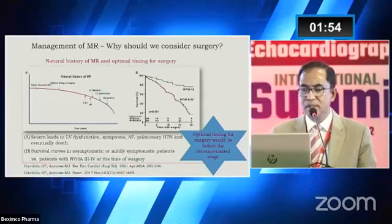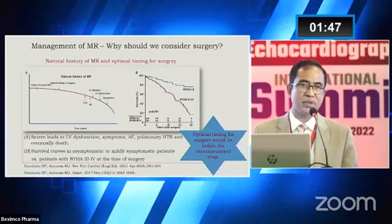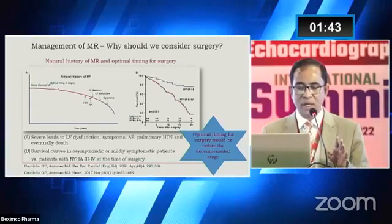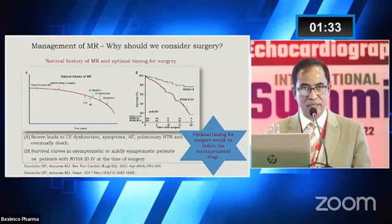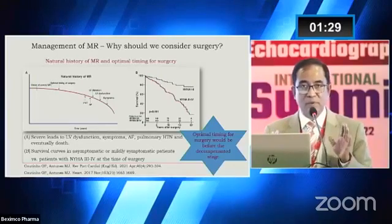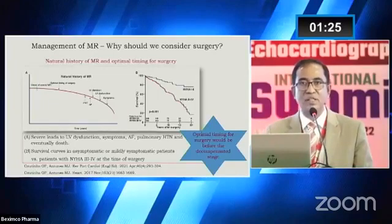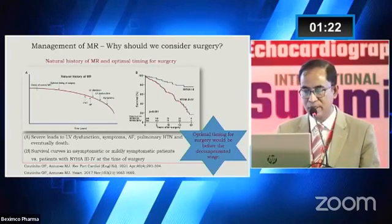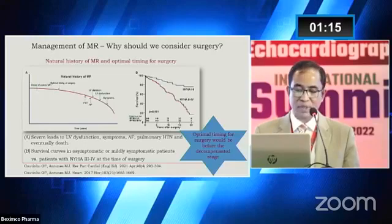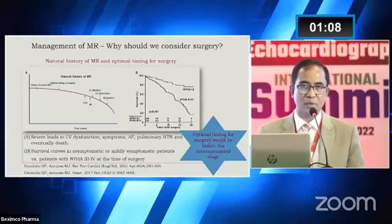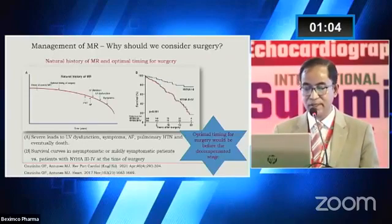Why are we interested in these parameters? In the case of severe mitral regurgitation, it is bound to progress if untreated. Over the course of time there will be left ventricular dilatation and dysfunction, the patient may become symptomatic, and ultimately may die. So the best approach is to intervene before decompensation begins. As shown, in mild to moderate MR the prognosis over the years is relatively better, but in grade 3 to 4 MR the prognosis is quite gloomy, so early action is essential.